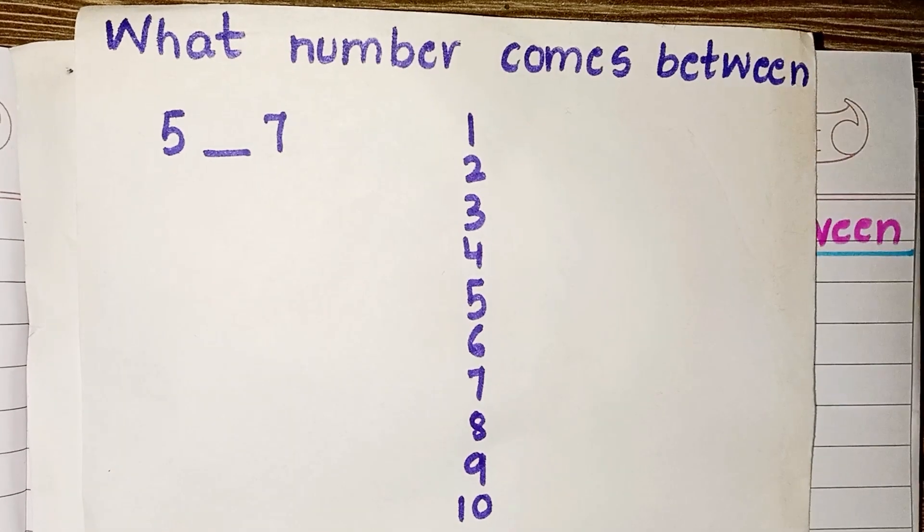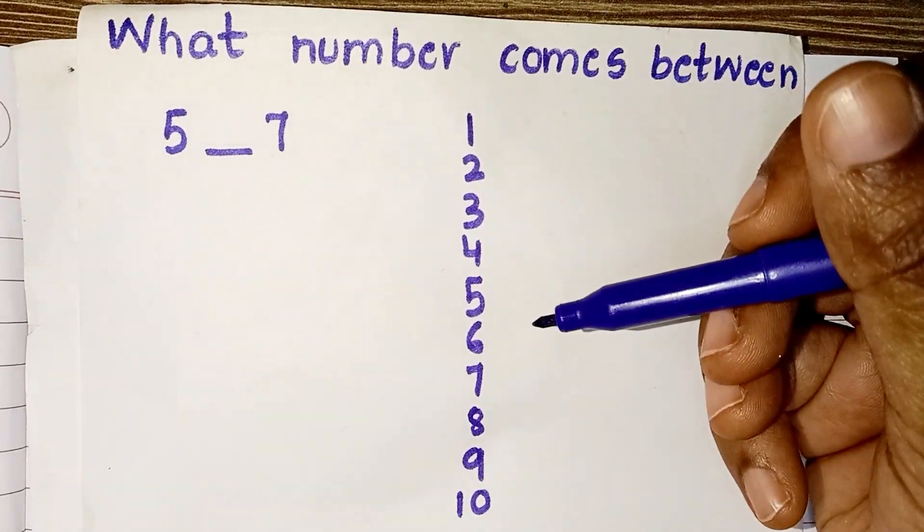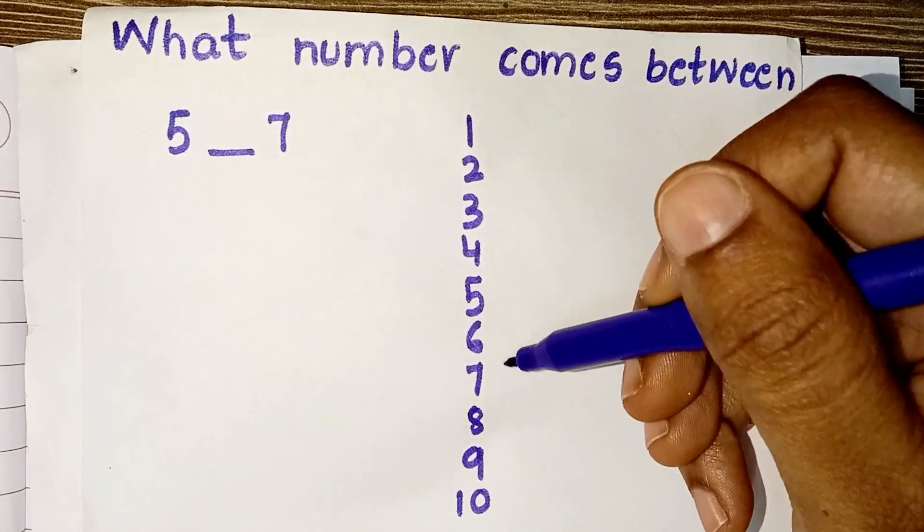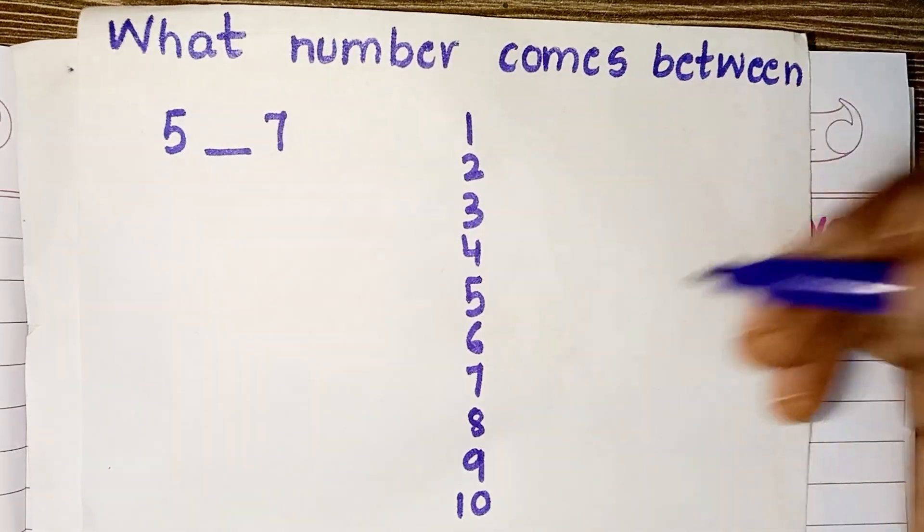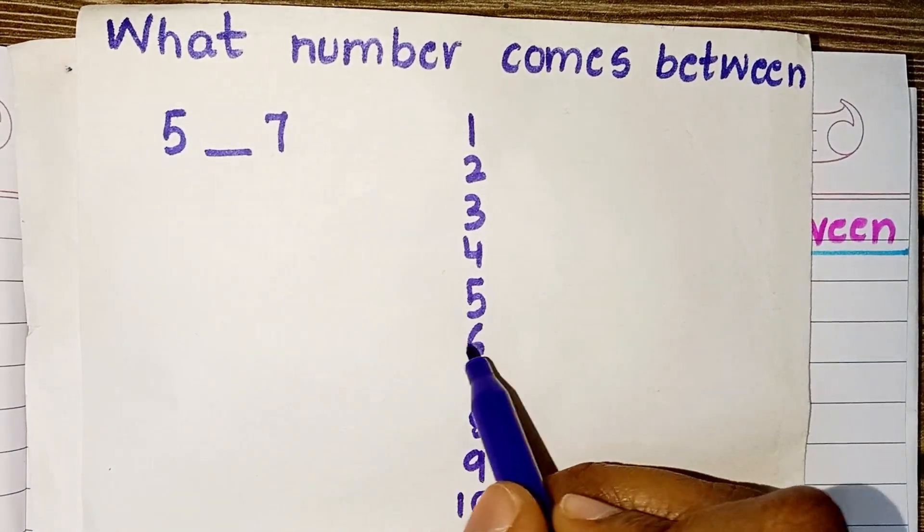6, 7, 8, 9, 10. So, what number comes between 5 and 7? It is 6.